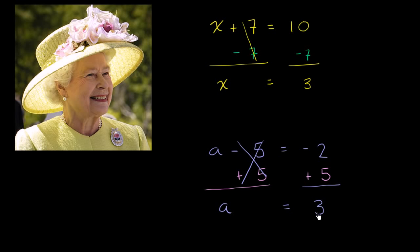Once again, you can verify it. 3 minus 5 is indeed equal to negative 2.